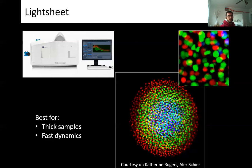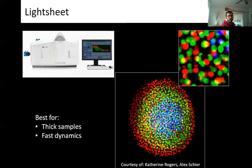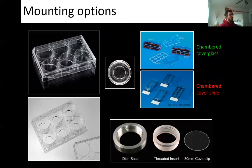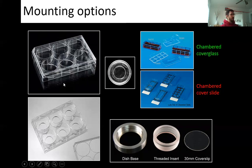Those are the options at the HCBI for live cell imaging. When getting ready for a live cell experiment, especially if you're used to fixed cell work, you really need to reconsider your sample prep. The first thing to figure out is how you're going to mount your sample — there are many options. We have standard tissue culture multi-well plates, though I'll explain why those might not be best, as well as cover slip-bottom options, 35 mm dishes with cover slip bottoms, and more elaborate systems.